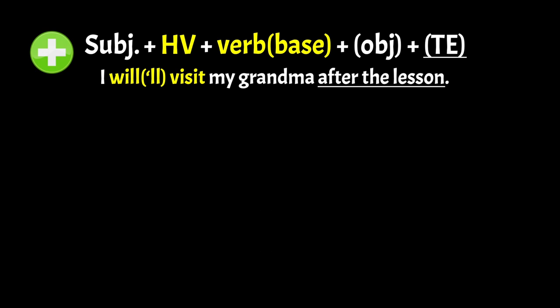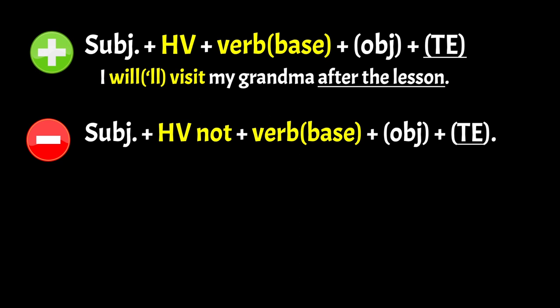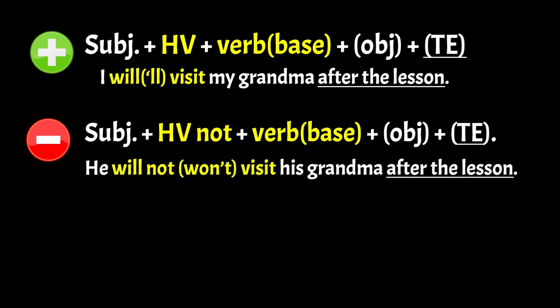After the lesson is a time phrase. For a negative sentence you need the subject, then you need the helping verb plus not, then you need the base of the verb, then maybe the object, and then maybe the time expression. For example: He will not visit his grandma after the lesson.